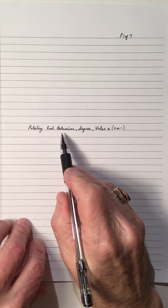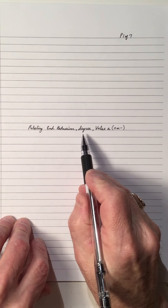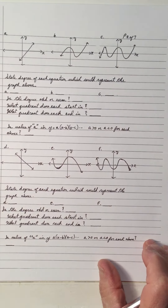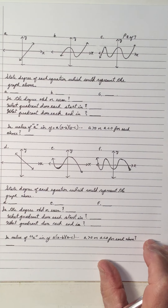Hi, welcome to my video on relating the end behavior, the degree, and the value of A being a plus or minus in a polynomial equation and a graph.